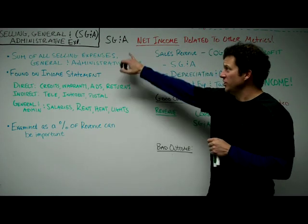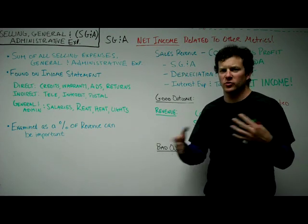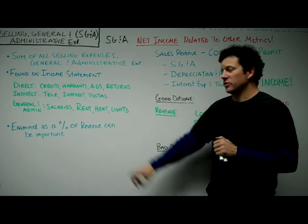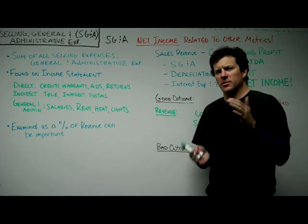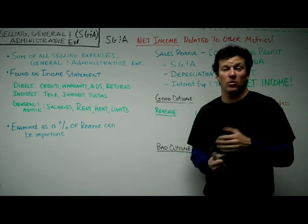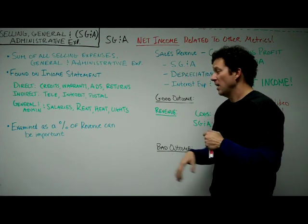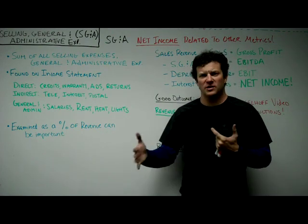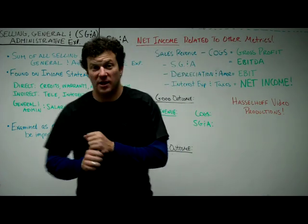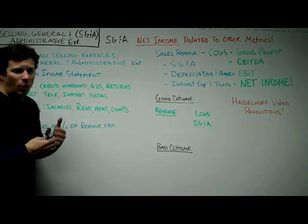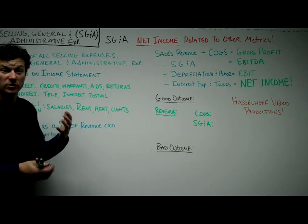When you look at SG&A, what you're doing is examining it as a percentage of revenue. It can also be a percentage of net income, but most often it's examined as a percentage of revenue. So if you generate a million bucks in revenue, you look at how much you're spending on cost of goods sold versus how much you're spending on selling general and administrative expenses. You want to watch that ratio because it goes to profitability.